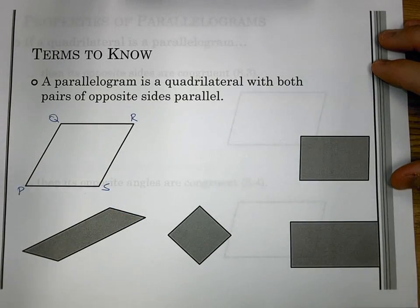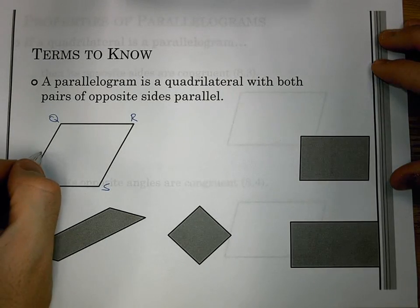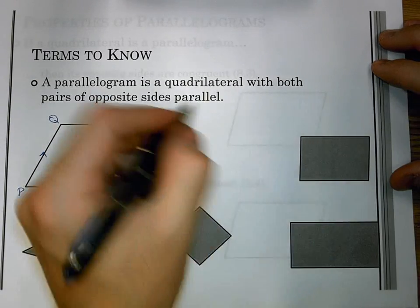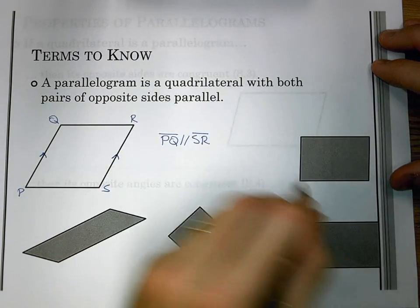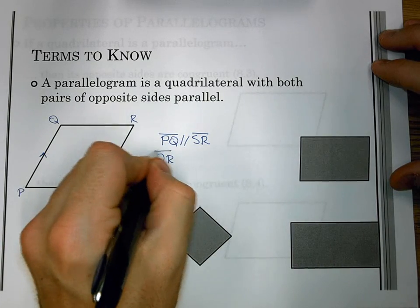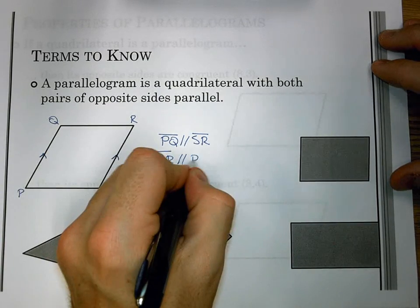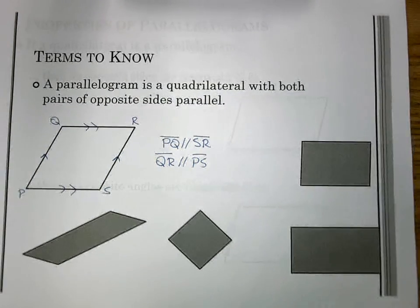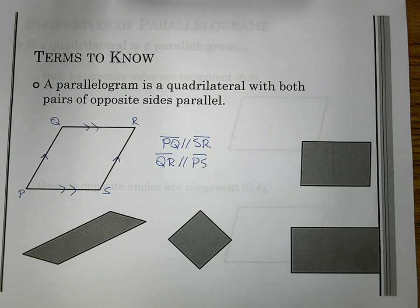So if I have my parallelogram PQRS, I know that PQ is parallel to SR and QR is parallel to PS. That is what I have when I'm looking at a parallelogram. Where we go from here is we now have some theorems that introduce new properties for parallelograms. But remember, it still comes back to a parallelogram is just a quadrilateral with both pairs of opposite sides being parallel.